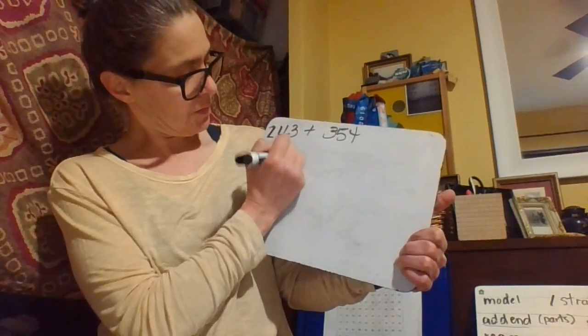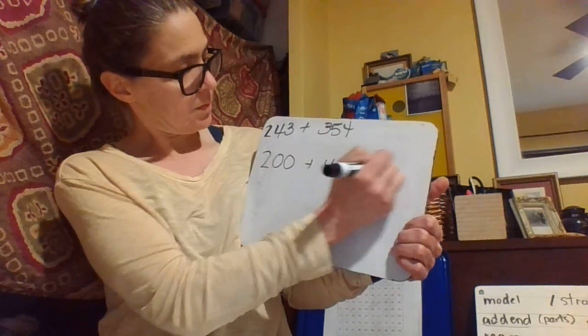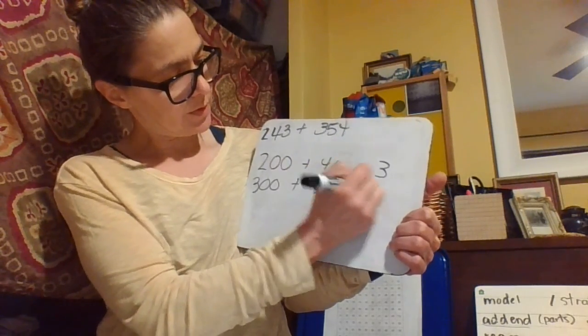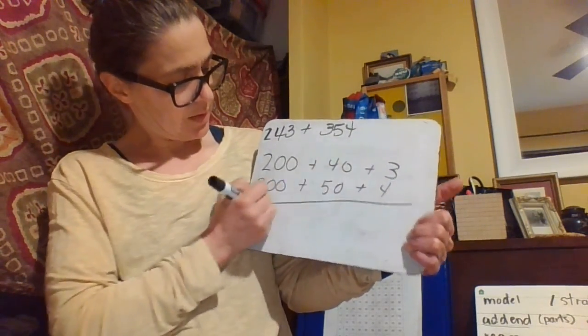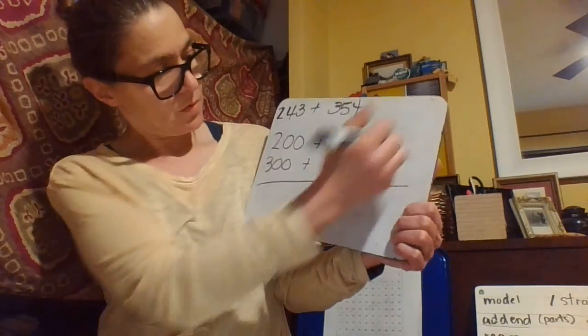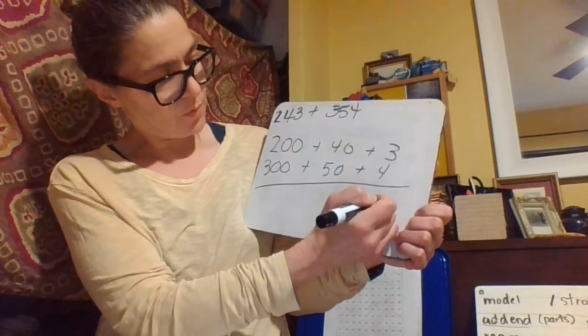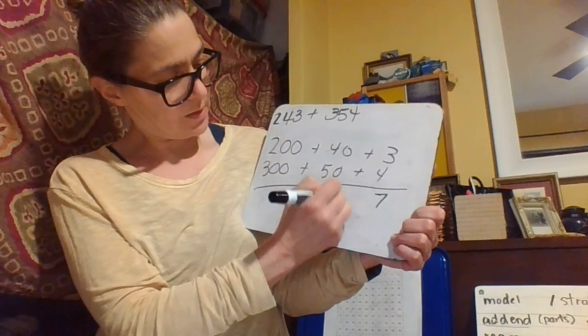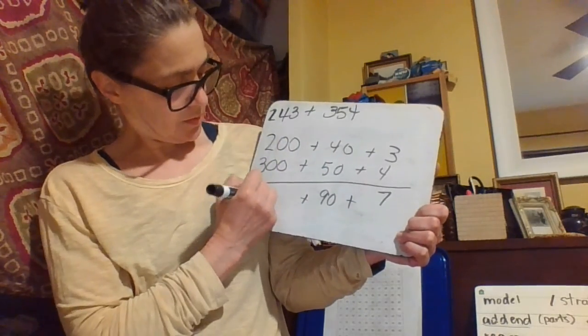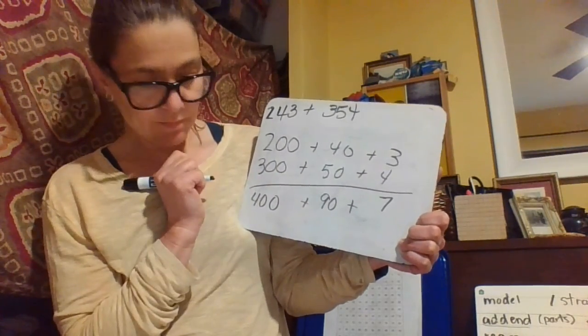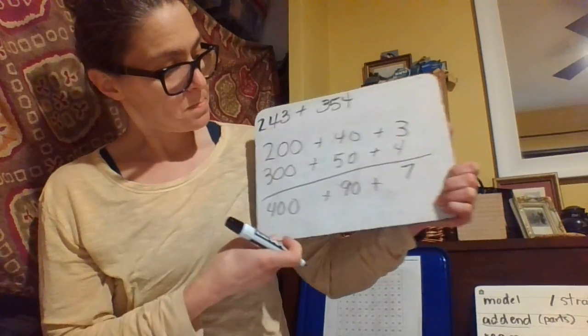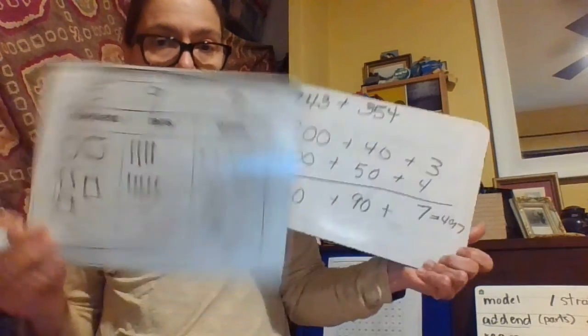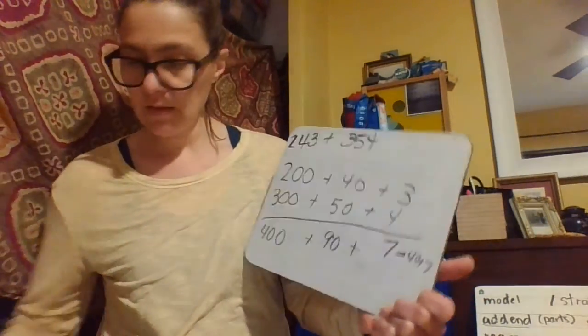When we do it here we would have 200 plus 40 plus 3, 300 plus 50 plus 4. This is your partial sums. Then we would do 3 plus 4 is 7, 40 plus 50 is 90, and 200 and 300 is 500. Then we would add them back together. We have 597.